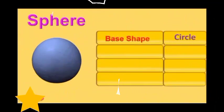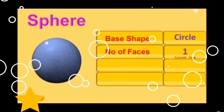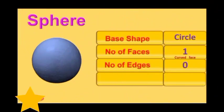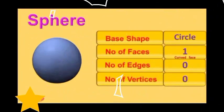Sphere. Base shape: circle. Number of faces: 1. Number of edges: 0. Number of vertices: 0.